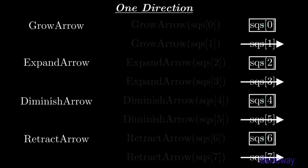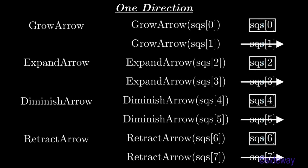Some typical one direction arrow methods are GrowArrow, ExpandArrow, DiminishArrow, and RetractArrow.